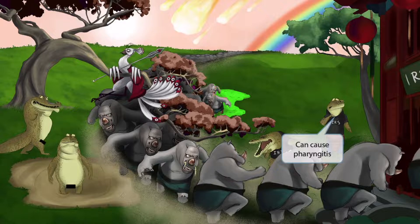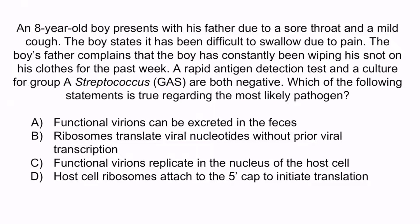Now let's review with a question. An eight-year-old boy presents with his father due to a sore throat and mild cough. The boy states it has been difficult to swallow due to pain. His father complains the boy has been wiping snot on his clothes for the past week. A rapid antigen detection test and a culture for group A streptococcus (GAS) are both negative. Which of the following statements is true regarding the most likely pathogen?